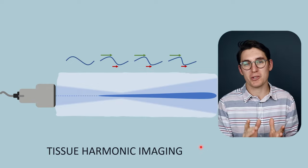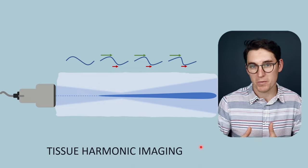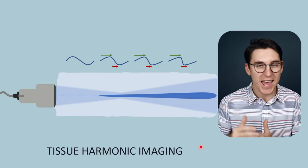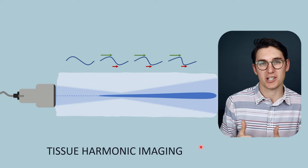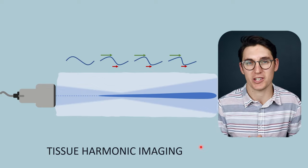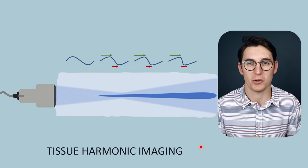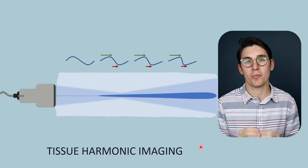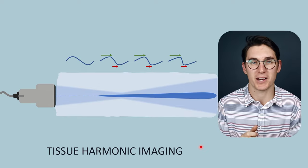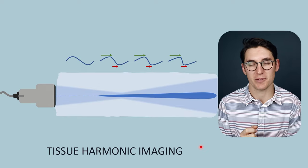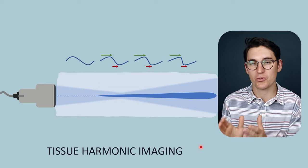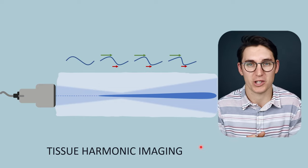Tissue harmonic imaging has the same basic principle — we send an ultrasound pulse into the tissue at a set frequency and we wait for those returning echoes to create a B-mode image. Where tissue harmonic imaging differs is that the returning echoes are selected by our transducer. We only listen for set frequency returning echoes, and those frequencies are what is known as harmonic frequencies.